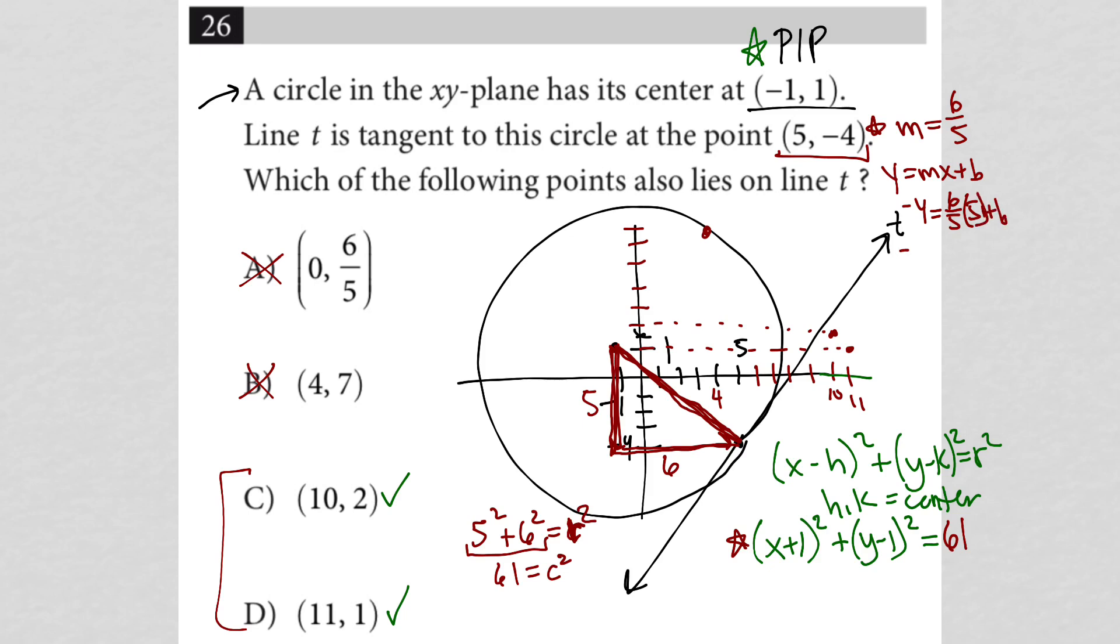And then I'd have negative 4 equals 6 fifths times 5 is 6 plus b. Subtract 6 from both sides. 6 is canceled out. This becomes negative 10 equals b. And now I have the equation of my line, which would be y equals 6 fifths x minus 10.